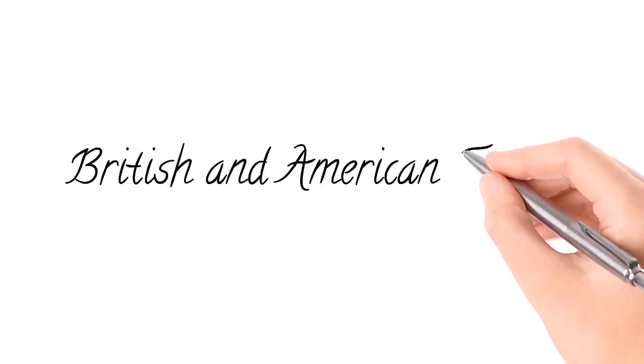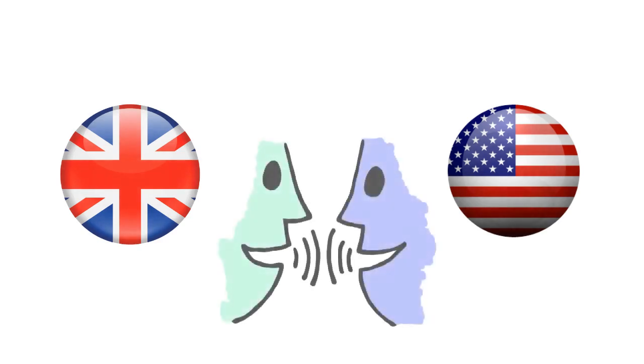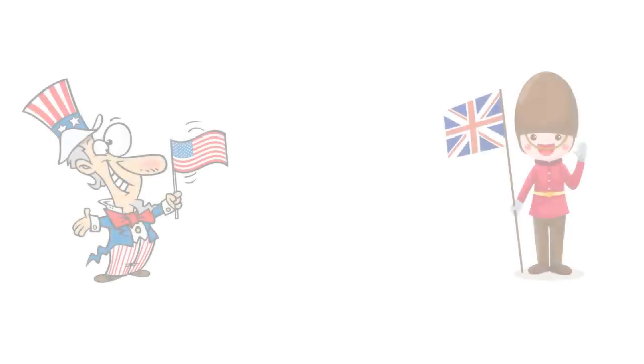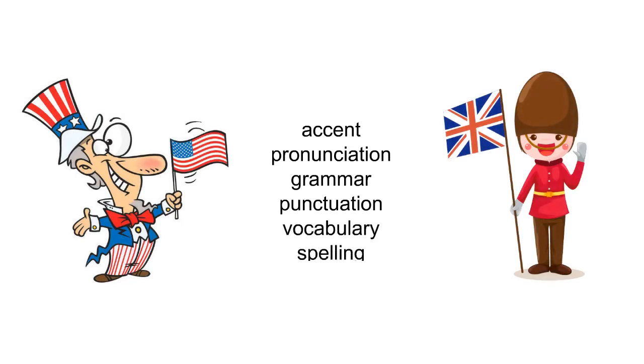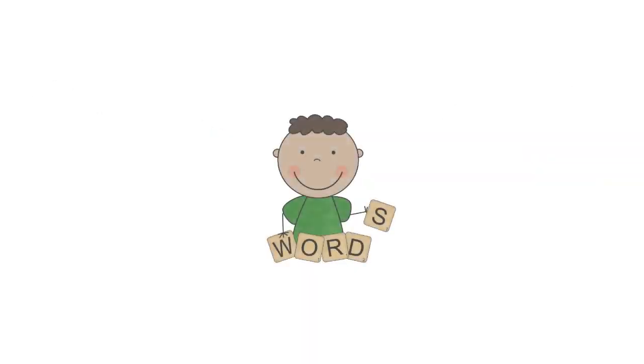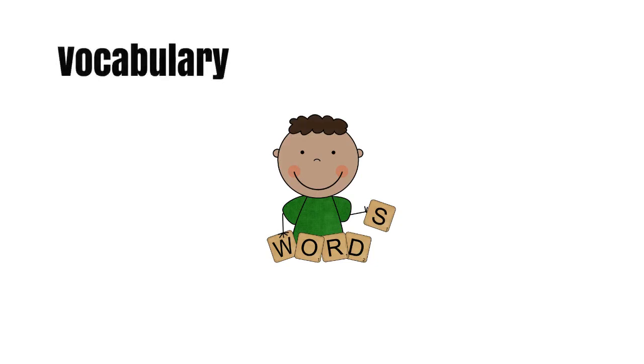British and American English. Even though British and American English are the same language, there are many differences between them, but not so many that communication is not possible. Differences between them include accent, pronunciation, grammar, punctuation, vocabulary, and spelling. This video focuses on vocabulary and spelling and the variety of words that exist in these two types of English.